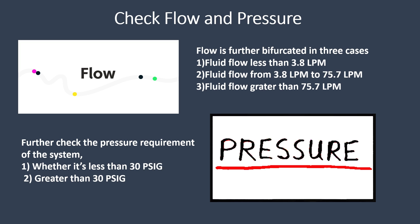First, we need to check the flow and pressure requirements of the pump. Flow is bifurcated into three cases: (1) fluid flow less than 3.8 lpm, (2) fluid flow from 3.8 lpm to 75.7 lpm, and (3) fluid flow greater than 75.7 lpm. Further, check the pressure requirement: whether it is less than 30 psig or greater than 30 psig.